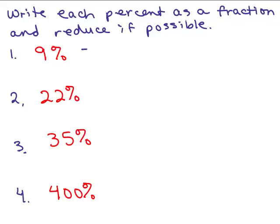Okay, so let's try this. 9%, remember we're trying to write it as a fraction, so we could simply write it over 100. That means 9 divided by 100, and that can't be reduced, so that's the answer.